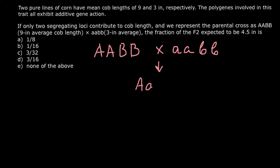All of the F1 generation is going to be genetically uniform. So this is parent 1 at 9 inches and parent 2 at 3 inches. To find the contribution of each additive allele, we divide 9 by 4 alleles, since we have 4 alleles that together mean 9 inches. That gives us 2.25 inches per dominant allele.